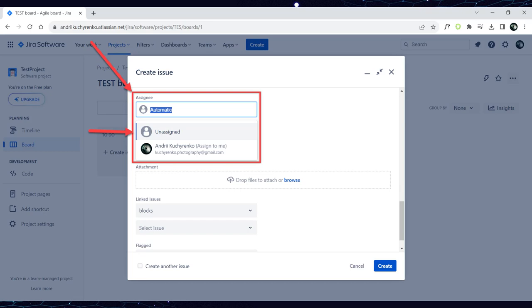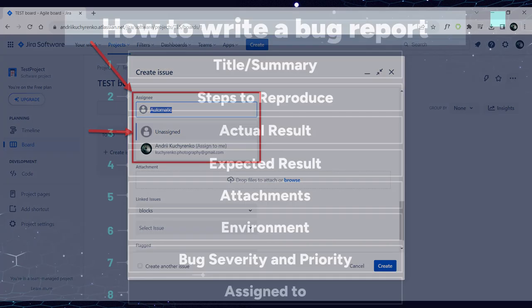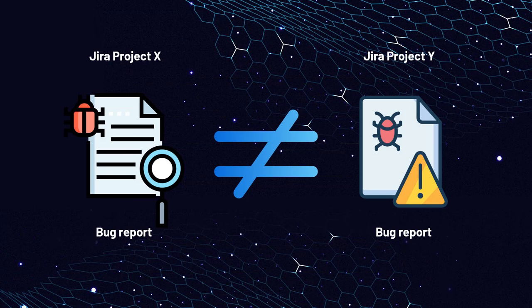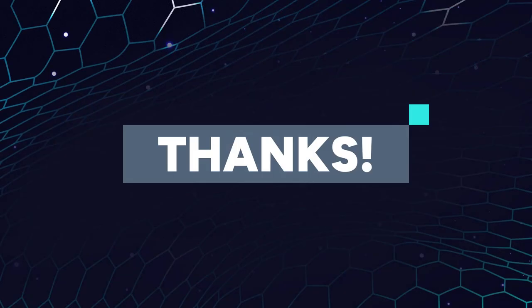So in this video, we have covered how to write 8 components of the bug report: Title/Summary, Steps to Reproduce, Actual Result, Expected Result, Attachments, Environment, Bug Severity and Priority, and Assignee. Remember that bug reports can vary in terms of their specific fields and the information they collect depending on the bug tracking system or project management tool in use, as well as the organization's processes and preferences. That's all from our side. If there are topics you would like to see, write a comment or a question to the lecture. We hope to see you in the next video.